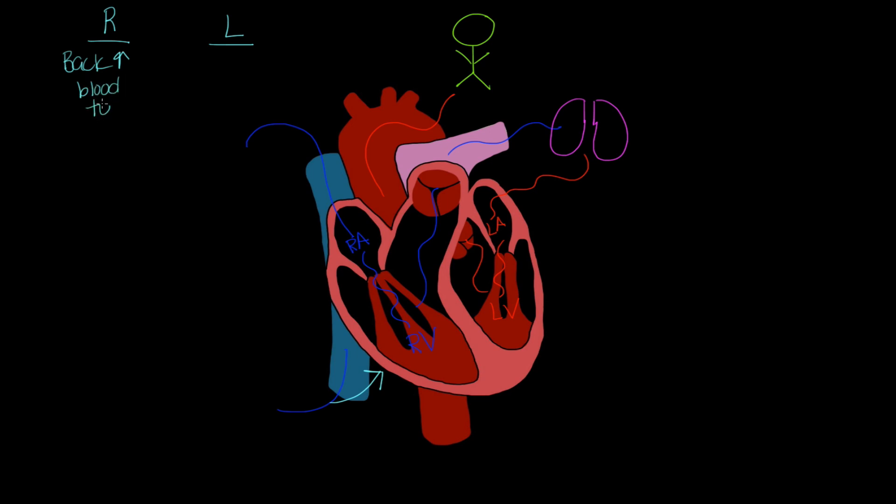So we're going to have a decreased amount of blood that's making it to the lungs, and we're going to have a backup of blood through the right atrium. Because the blood that's in the right atrium is going to empty into the right ventricle. But if that right ventricle isn't squeezing effectively, then the blood's just going to start to back up.